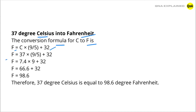F = 37 × (9/5) + 32. F = 7.4 × 9 + 32. F = 66.6 + 32. F = 98.6.